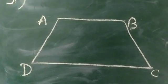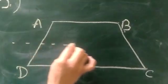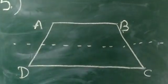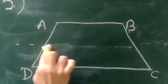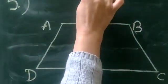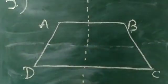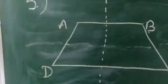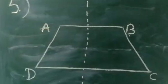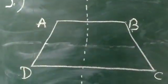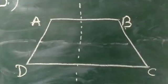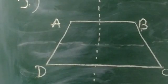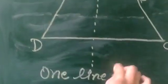Now we have to check how many lines of symmetry it is having. If we fold it diagonally, one part does not fall on the other, so that is not a line of symmetry. But if we divide it from the middle, one fold is on the other fold. So an isosceles trapezium has one line of symmetry.